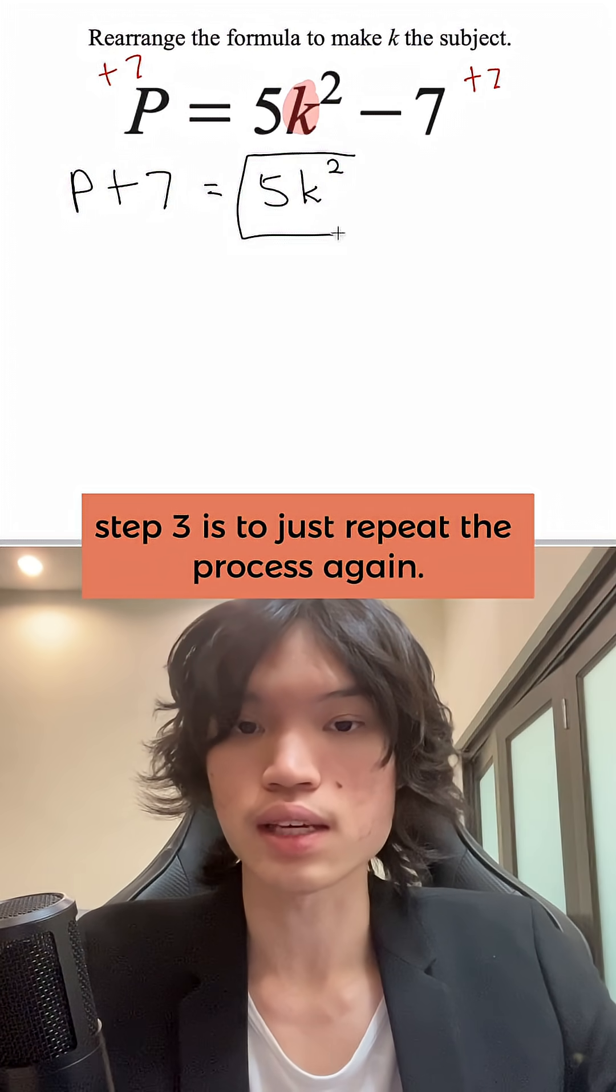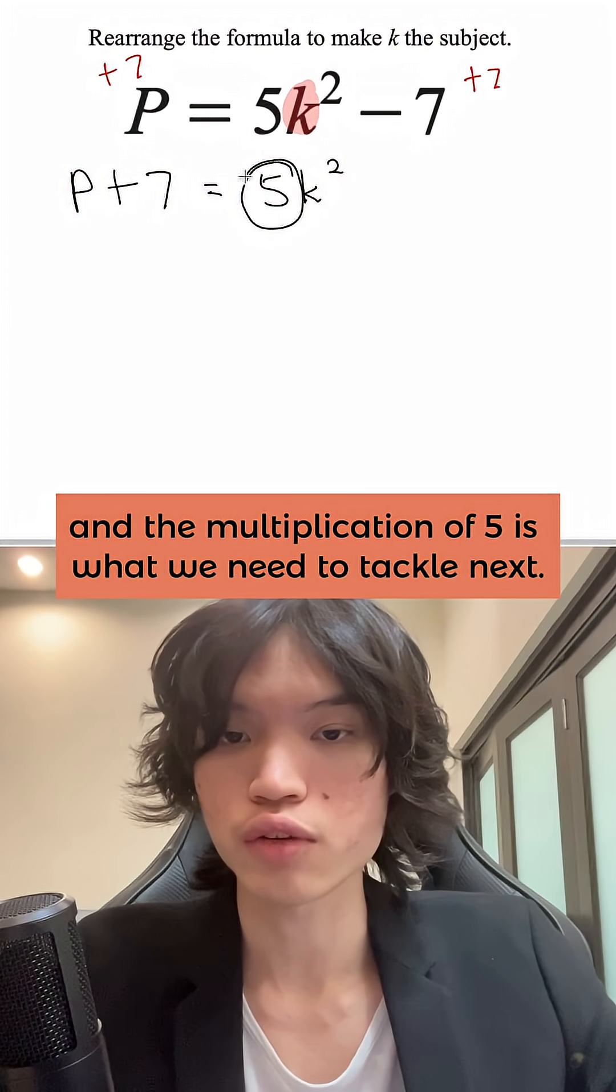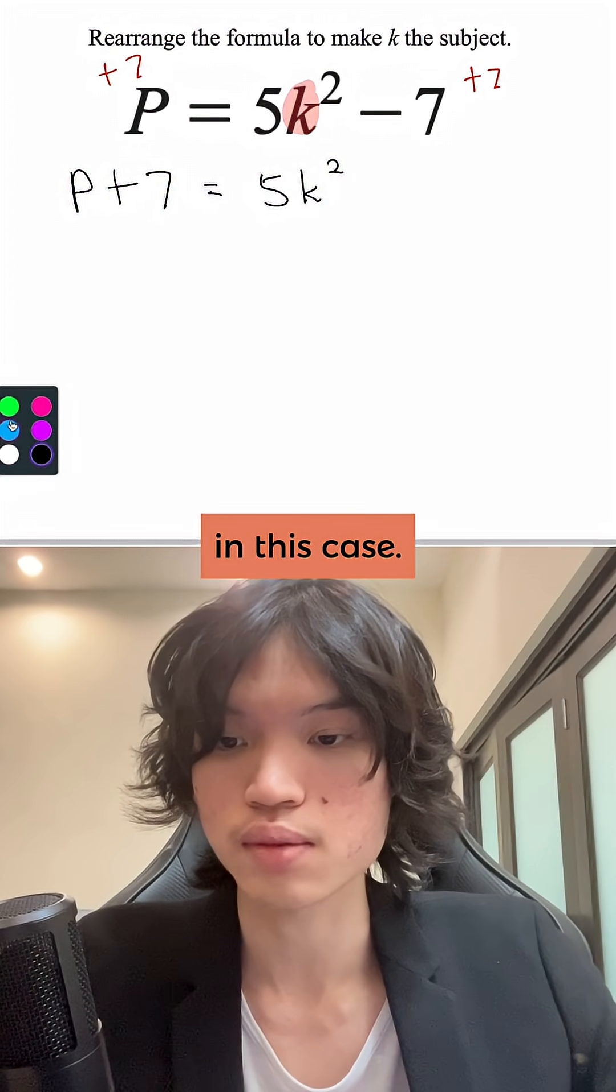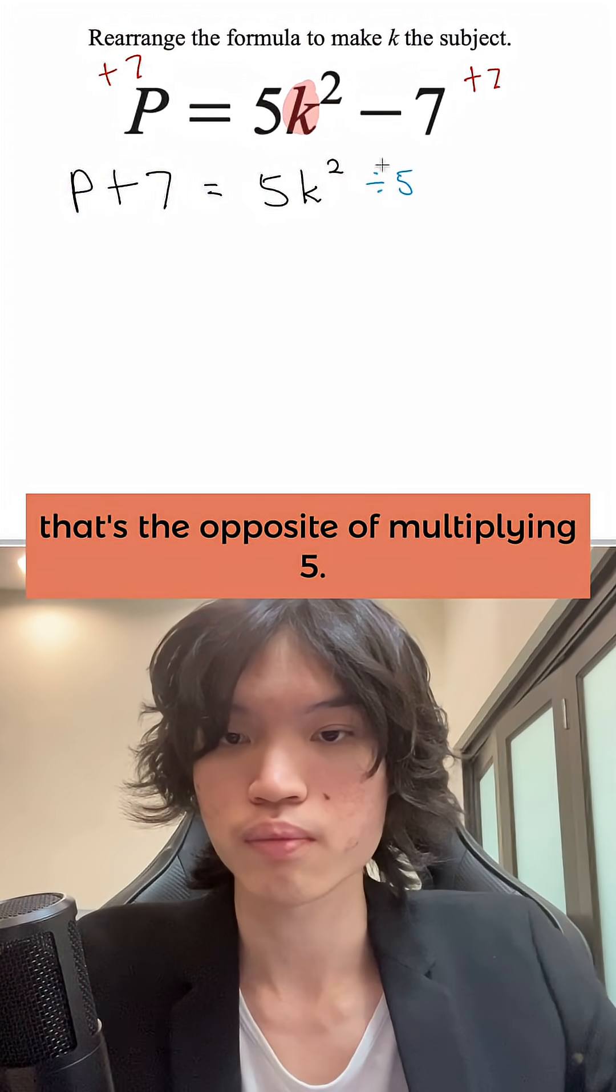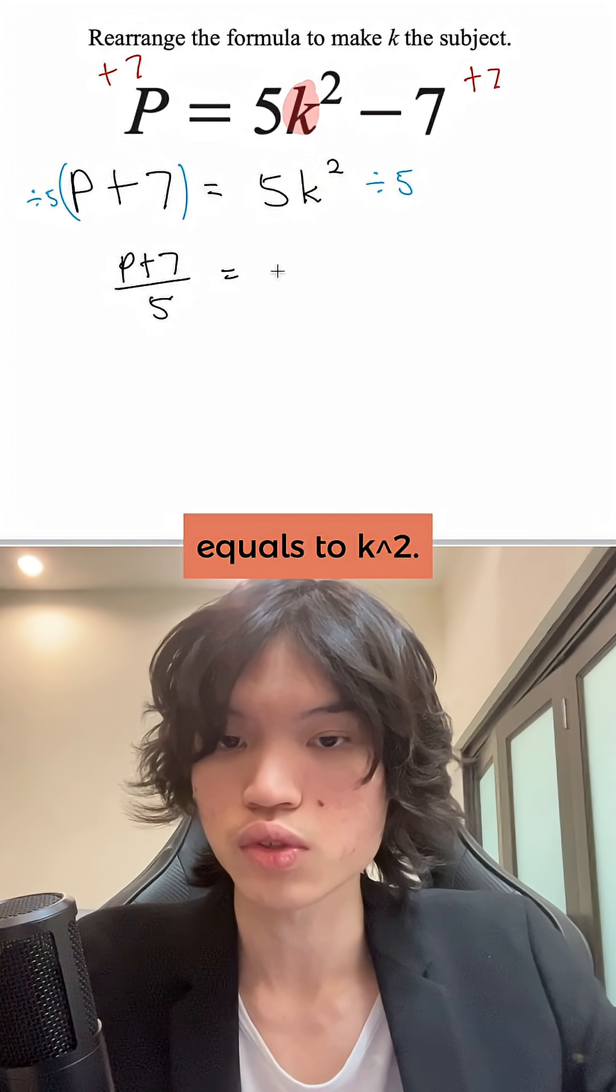Step three is to just repeat the process again. k squared is the closest operation, and the multiplication of 5 is what we need to tackle next. So we will divide 5 in this case. That's the opposite of multiplying 5. When we do it on both sides, you see P plus 7 over 5 equals k squared.